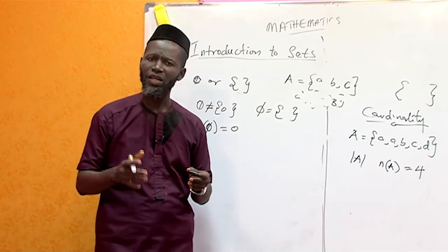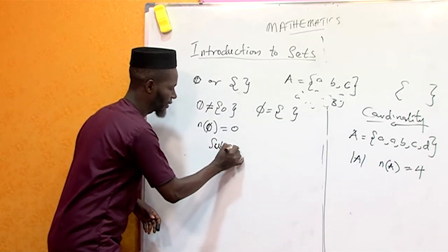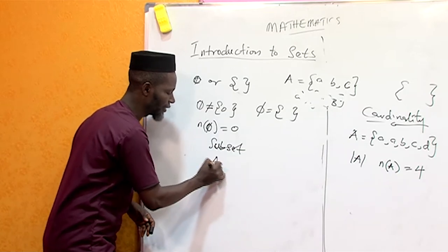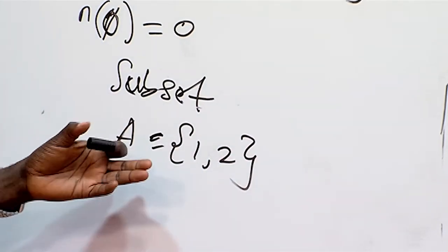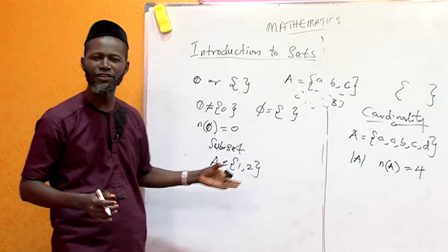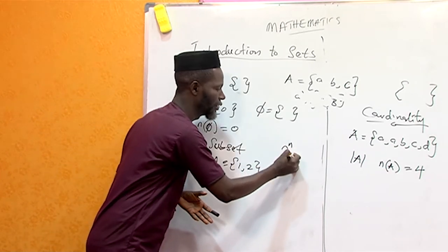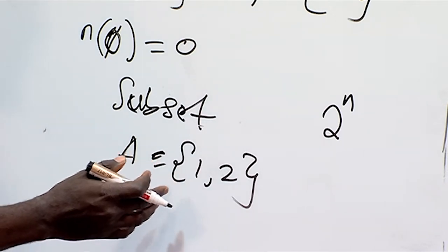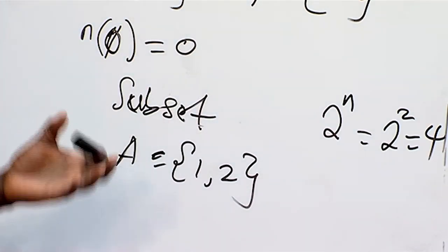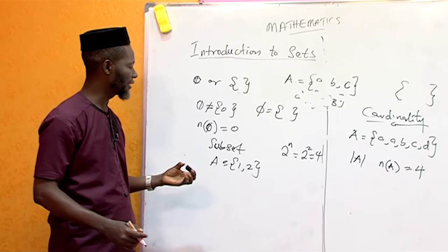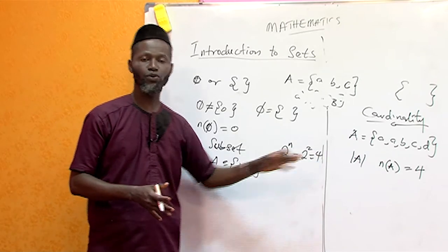Then we have a subset. Let's say we have A = {1, 2}. How many subsets can be generated from this A? We use the formula 2 raised to the power n, where n is the number of elements. This set contains two elements, so that is 2² = 4. That means the number of subsets that can be generated from set A is equal to 4.